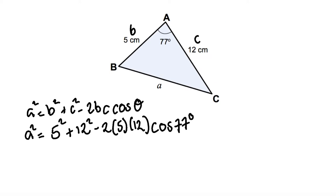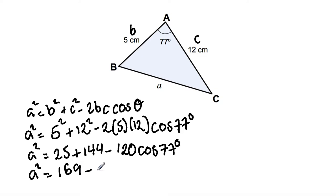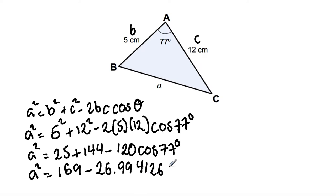Simplifying further, A squared is equal to 25 plus 144 minus 120 cos 77 degrees. 25 plus 144 is equal to 169, so we have A squared is equal to 169 minus 120 times cos 77, which equals 26.99412652.